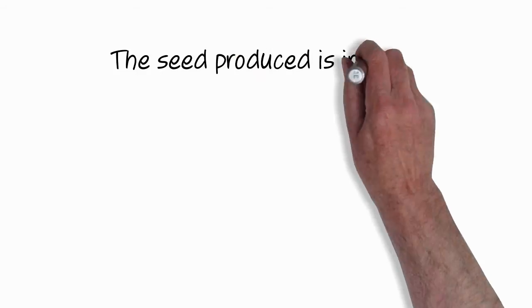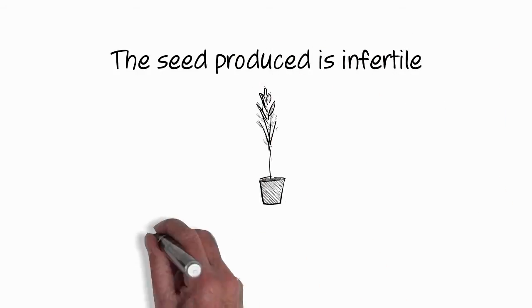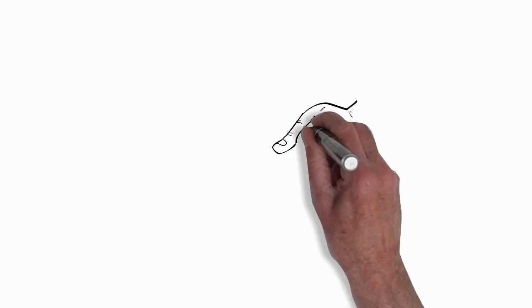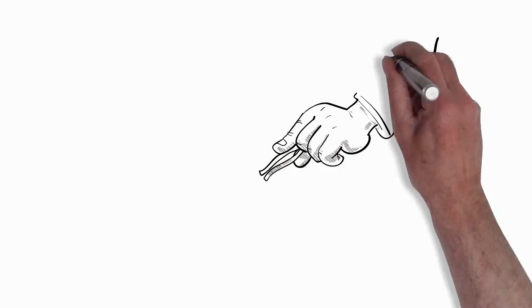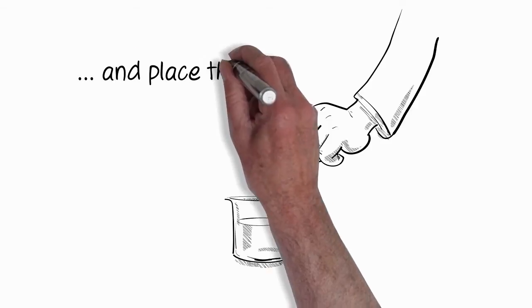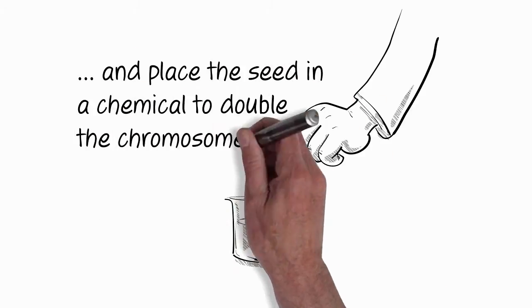The seed that initially develops in this cross is infertile. So to make it fertile we have to remove the seed and place it in a chemical that will double the amount of chromosomes in that seed and that will enable it to produce its own offspring itself.